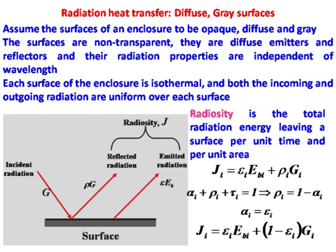For a diffuse gray surface, we say that epsilon equals alpha. Second, if I make an assumption of an opaque surface — please note that non-transparent and diffuse both go together — these are important assumptions only then can I get a useful relationship.